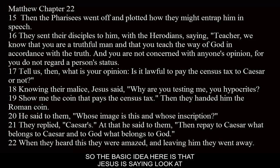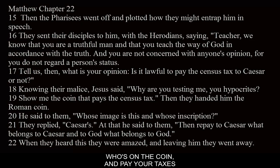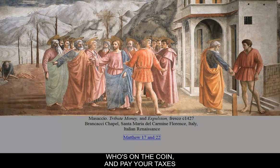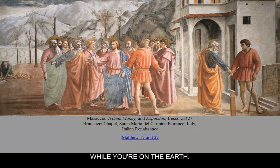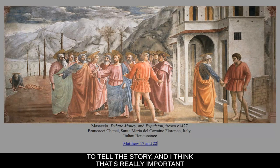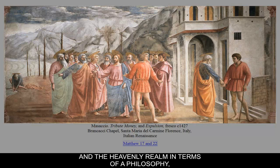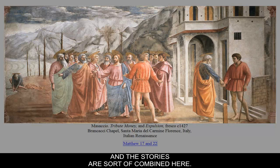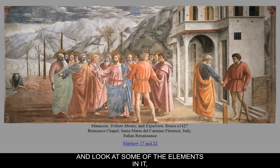The basic idea is that Jesus is saying, look at who's on the coin and pay your taxes while you're on the earth. These two chapters are conflated together to tell the story, which is really important because it divides the earthly realm and the heavenly realm in terms of philosophy. The stories are combined here, so let's take a look at the fresco.